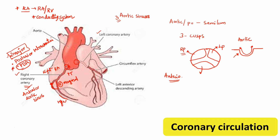Let us now discuss the origin, course, and branches of the left coronary artery. The left coronary artery takes origin from the left posterior aortic sinus. After the origin, it runs in between the left atrium and the pulmonary trunk.